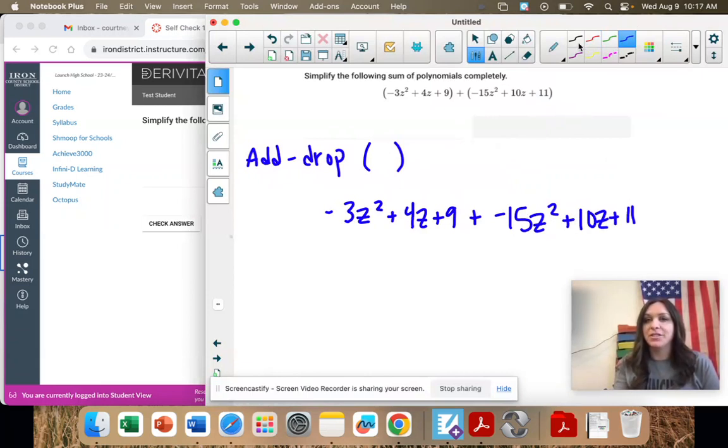Okay, once it's rewritten, you're looking for like terms. So you're looking at every term. There's six of them here. One, two, three, four, five, six. And you're looking for same variable, same exponent.